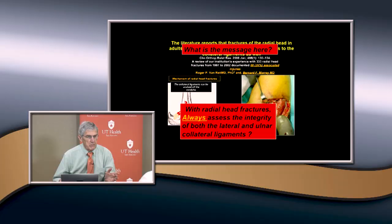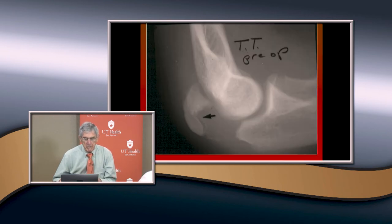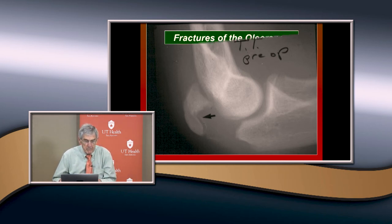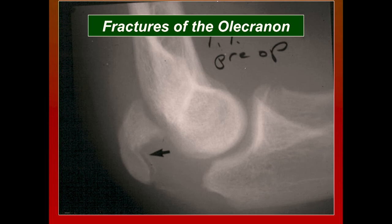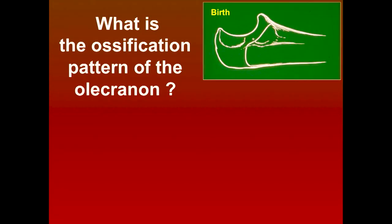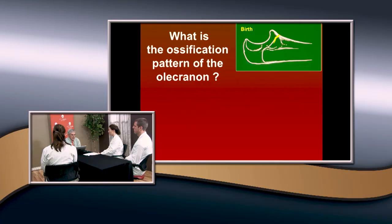So much for radial neck fractures and radial head fractures. Let's talk about the olecranon. You need to know about the ossification pattern. At birth, you don't have ossification. At eight years, that ossification goes posteriorly but you still don't see much there.